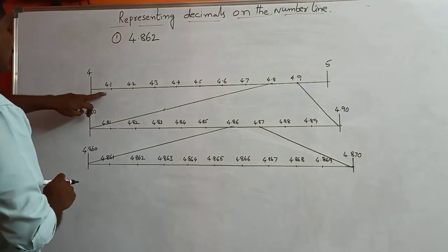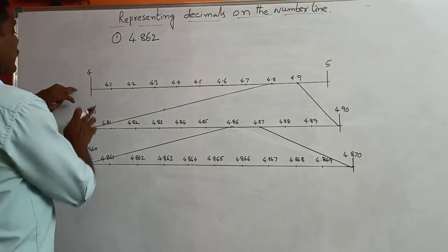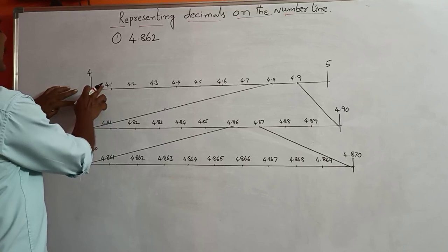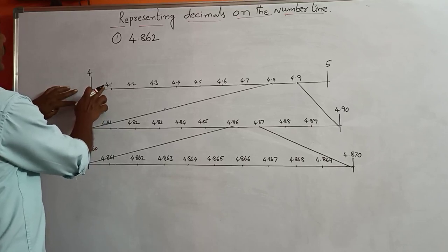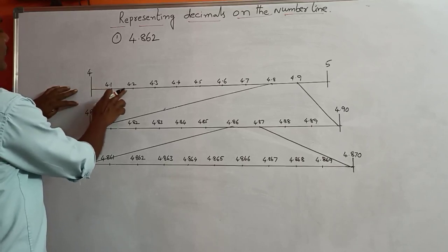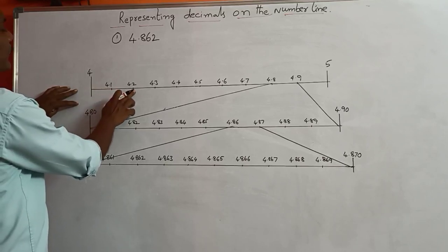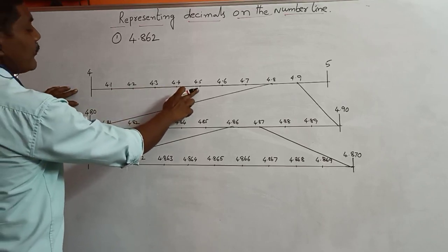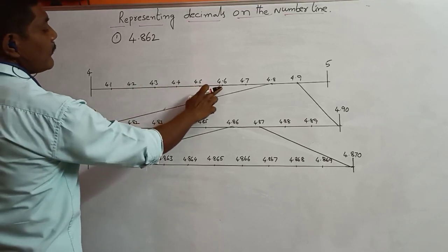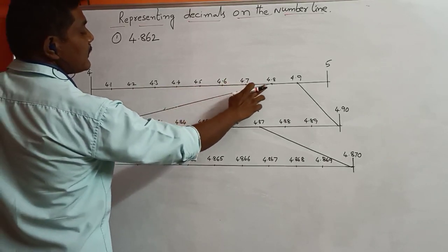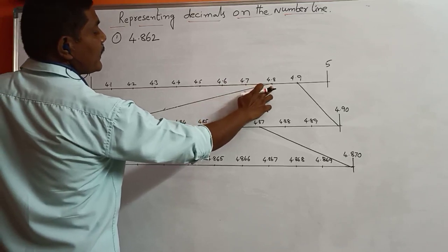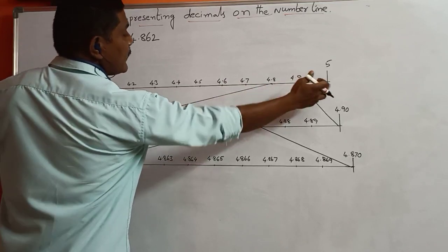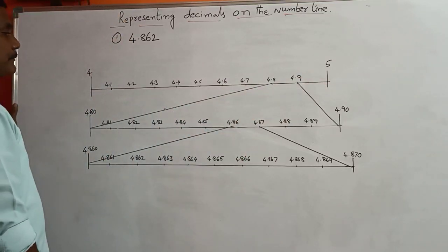So every part represents the decimal as 4.1, 4.2, 4.3, 4.4, 4.5, 4.6, 4.7, 4.8, 4.9, and then the number 5.